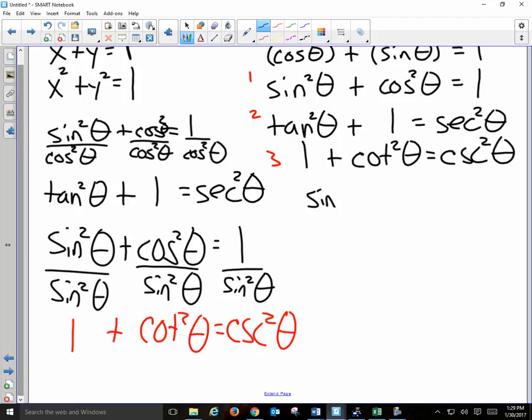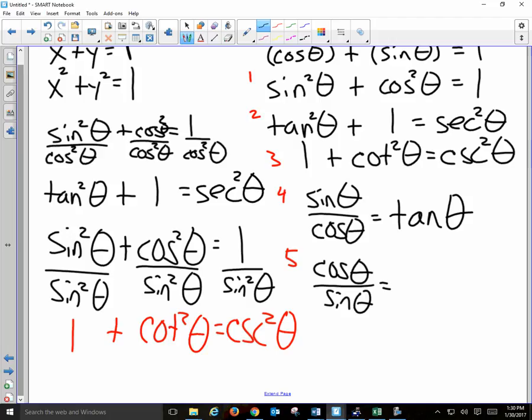We also said that sine of theta divided by cosine of theta is equal to tangent of theta. Cotangent. And cosine of theta divided by sine of theta is cotangent of theta. So those are my five really important formulas that we're going to use.